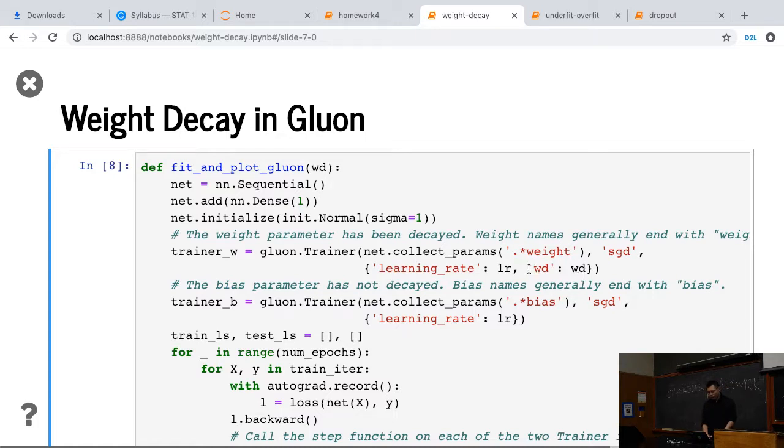For example, on Gluon, you can say that when you get the learning rate, besides the learning rate, you can specify that the weight decay, WD, equal to a particular number.